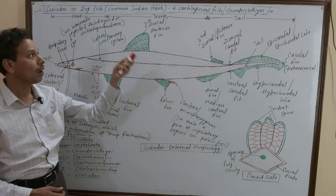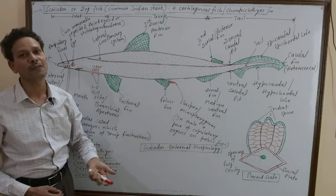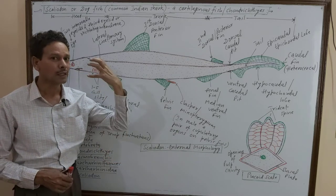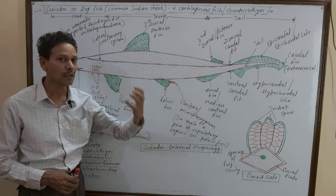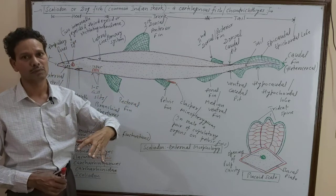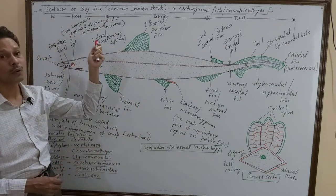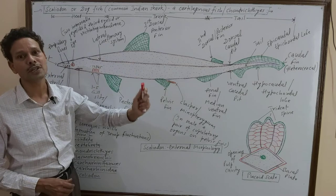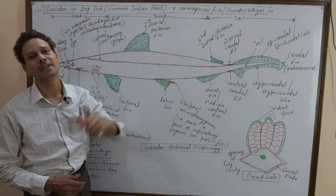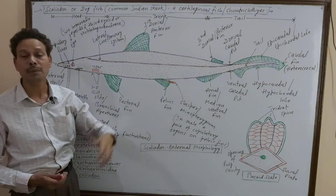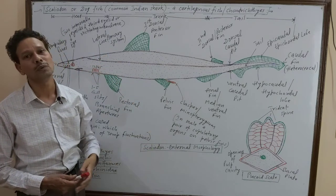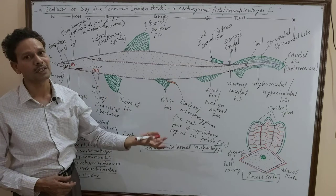The dogfish — all animals attack prey like a dog. Scoliodon is a shark fish, it is cartilaginous, belonging to the Chondrichthyes. Previously we discussed the bony fish — Labeo, the ostrich things.